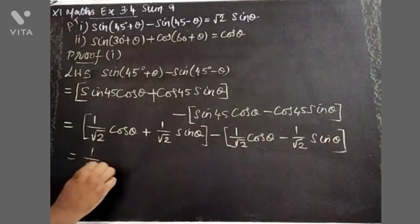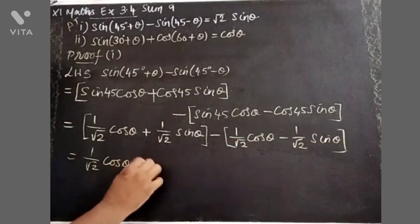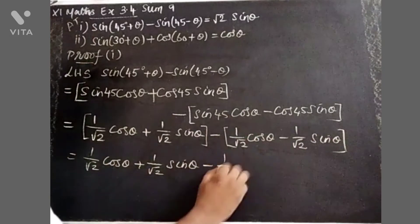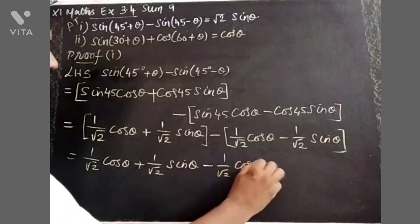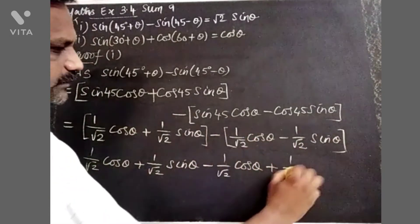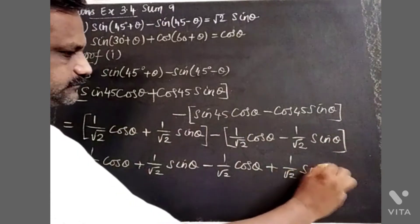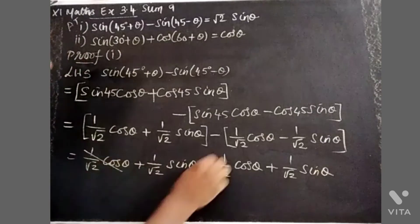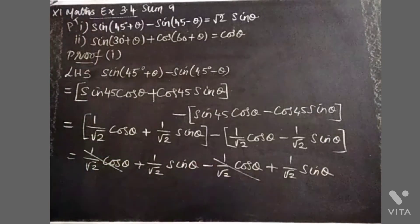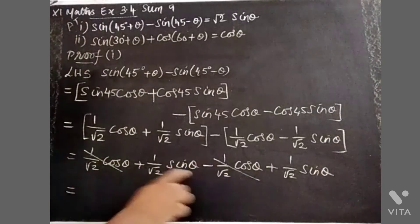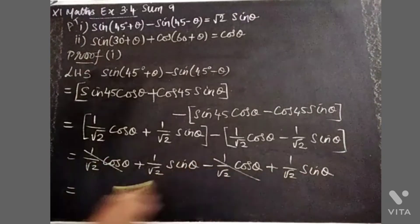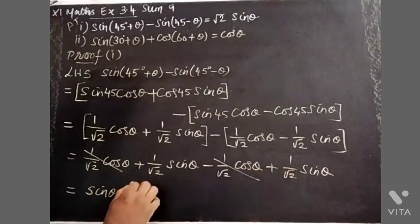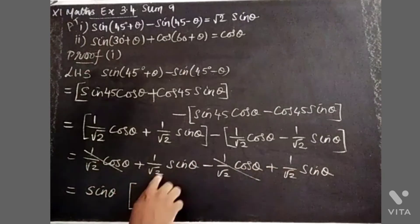Expanding the full expression: 1/√2 cos θ + 1/√2 sin θ minus 1/√2 cos θ + 1/√2 sin θ. The cos θ terms cancel out. If you take out the common terms, sin and sin combine. The exact same thing happens with the sine terms.